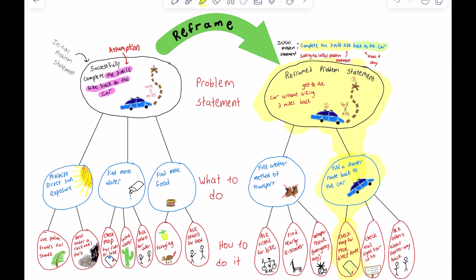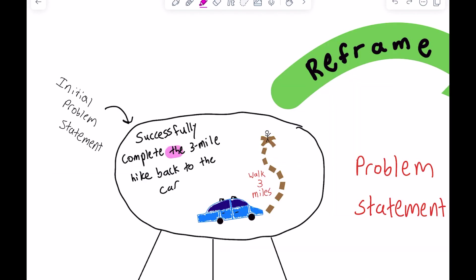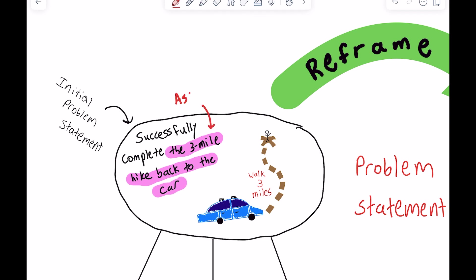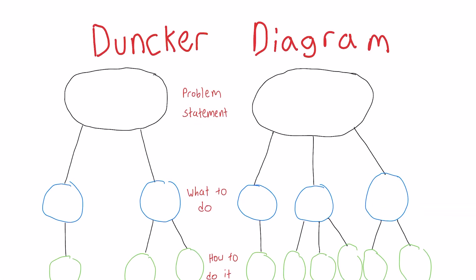We would have never discovered that solution with the initial problem statement because it included the assumption that the only way back to the car was to hike the same three-mile route. Problem solvers often make assumptions, and this isn't always a bad thing, but it's important to be aware of those assumptions and to verify that they aren't false whenever possible.